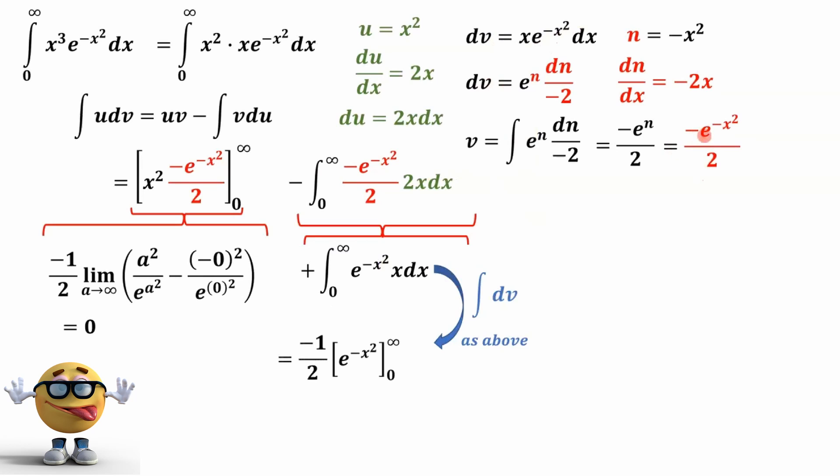It's going to be negative 1 half times e to the negative x squared, which is what we have right here. We're going to go from 0 to infinity. And if we plug this in, now mathematicians don't like plugging in infinity, but I was just trying to keep it clean. So hopefully you're okay with that. This goes to 0. And this one goes to 1.